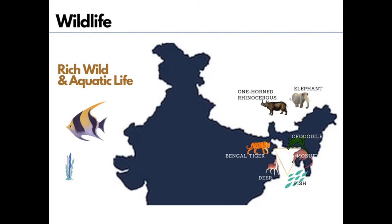We can see the one-horned rhinoceros in the Brahmaputra plain. In the delta region, we have the Bengal tiger, crocodile, and alligator. Some other common animals of the basin are elephants, tigers, deer, and monkeys. The basin also has a rich aquatic life found in fresh river water, lakes, and in the Bay of Bengal.